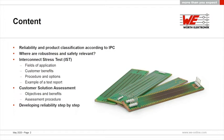We will talk about where robustness and safety are relevant, especially regarding reliability, and go deeper into the interconnect stress test — looking at the fields of application, customer benefits, procedure and options, and an example overview from a test report. Then we'll cover the customer solution assessment, what part the IST can play, and how it can help in different stages of your projects.